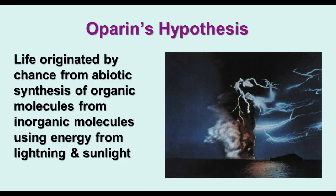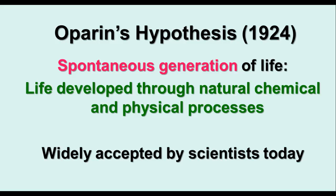There was a scientist named Oparin who had a hypothesis back in the 1920s that life originated by chance from the abiotic, or non-living, synthesis of organic molecules from inorganic molecules using energy from lightning and sunlight. He didn't have a way to experiment or find evidence for it, but that was his hypothesis. His hypothesis was called spontaneous generation of life — that life developed through natural, chemical, and physical processes. This is today widely accepted by scientists because more is known about the mechanisms that could cause this to happen.